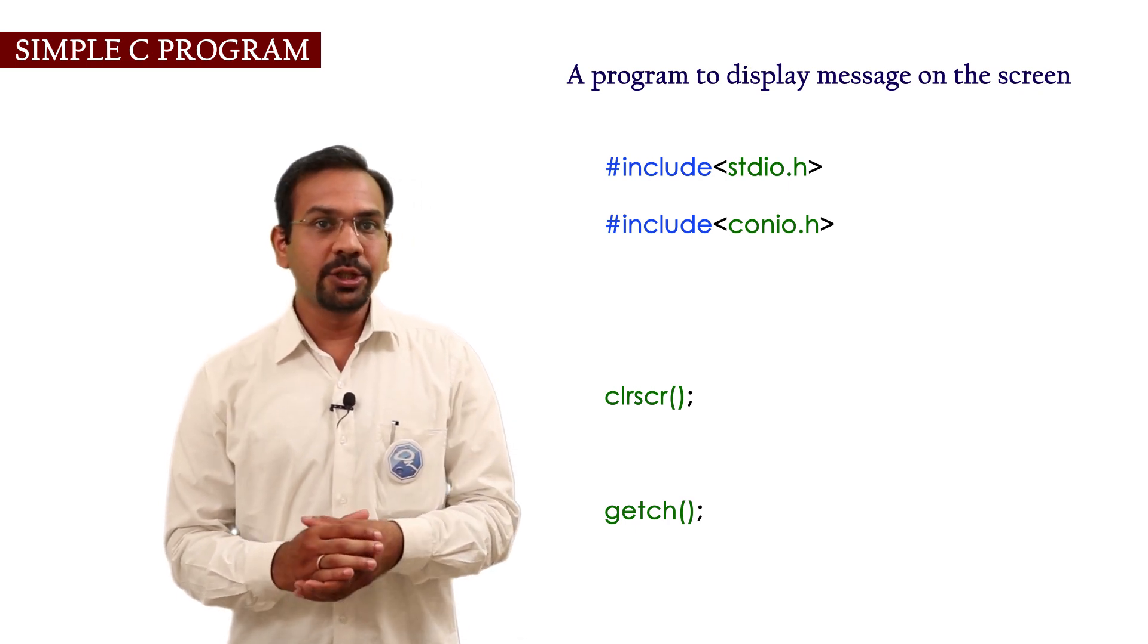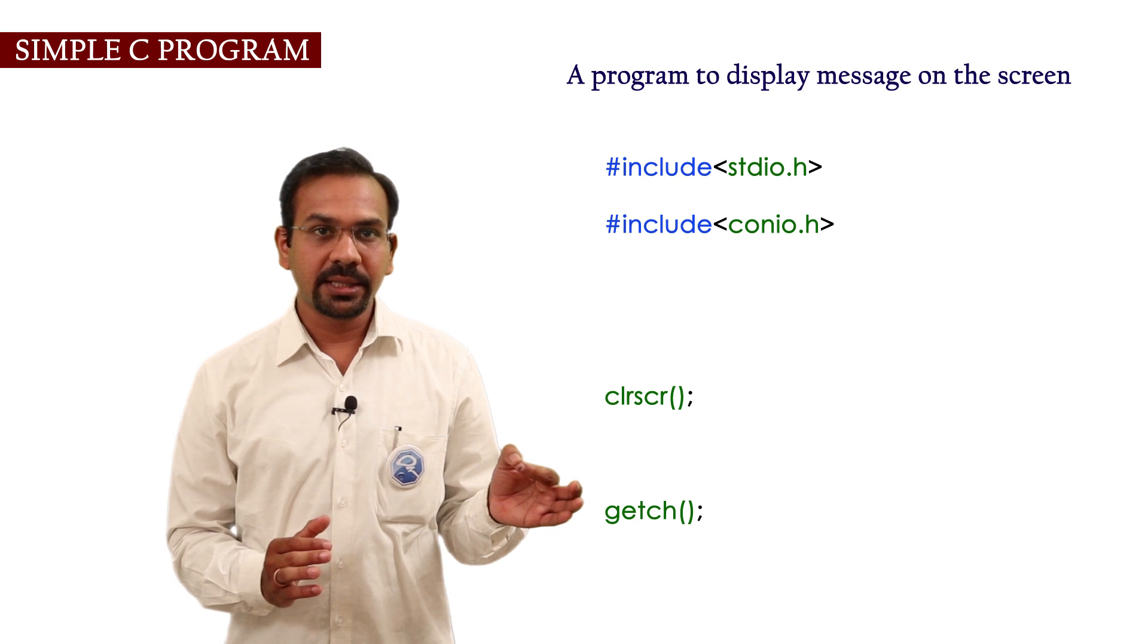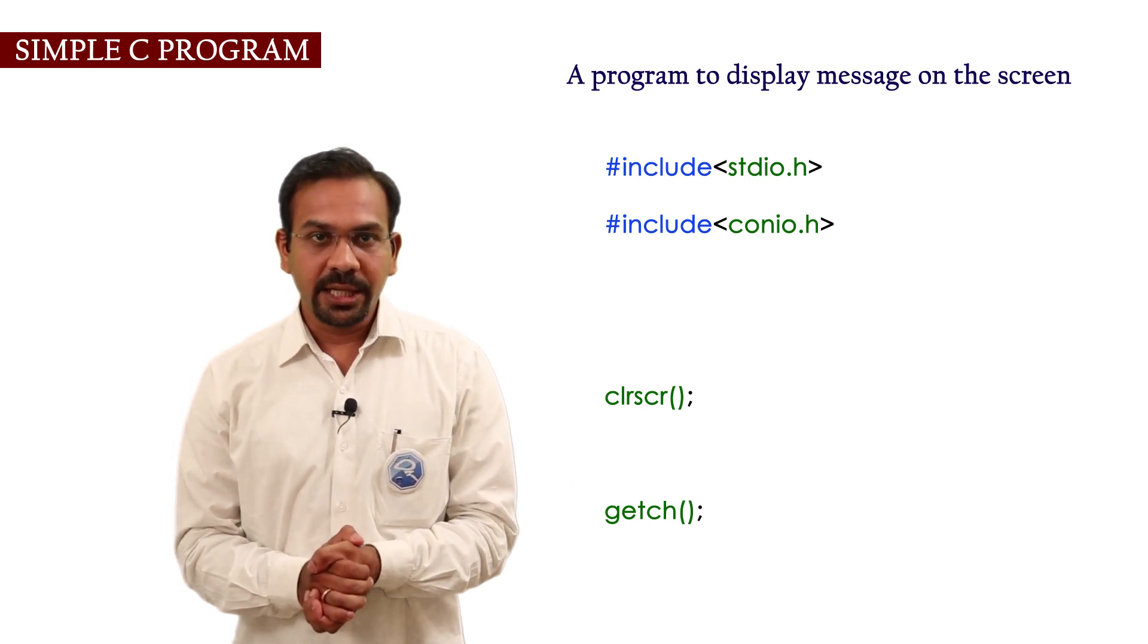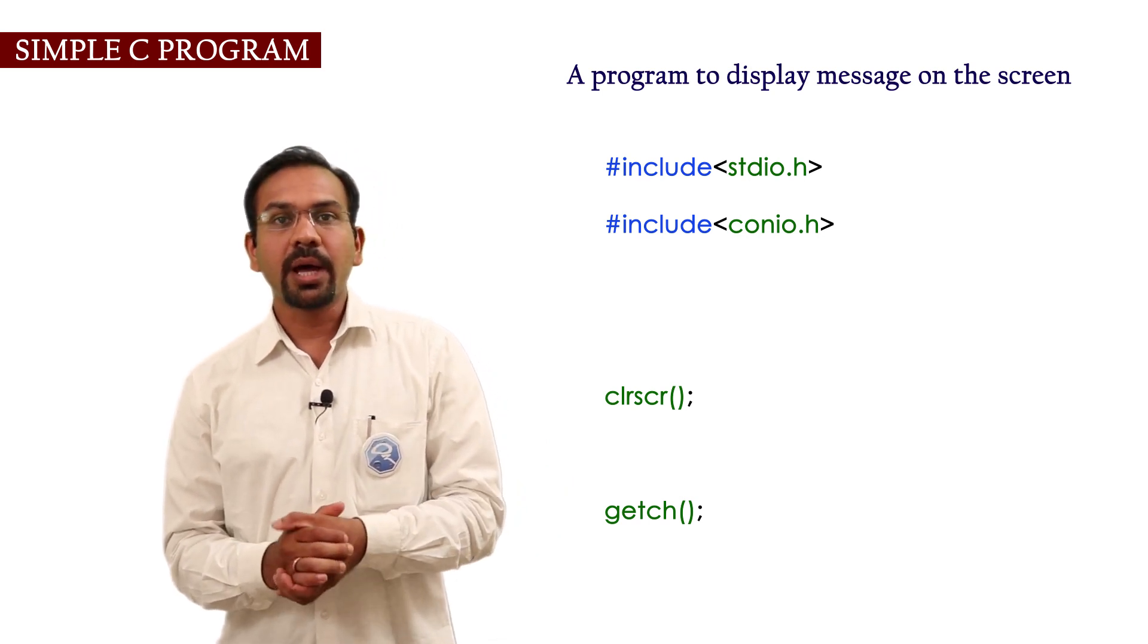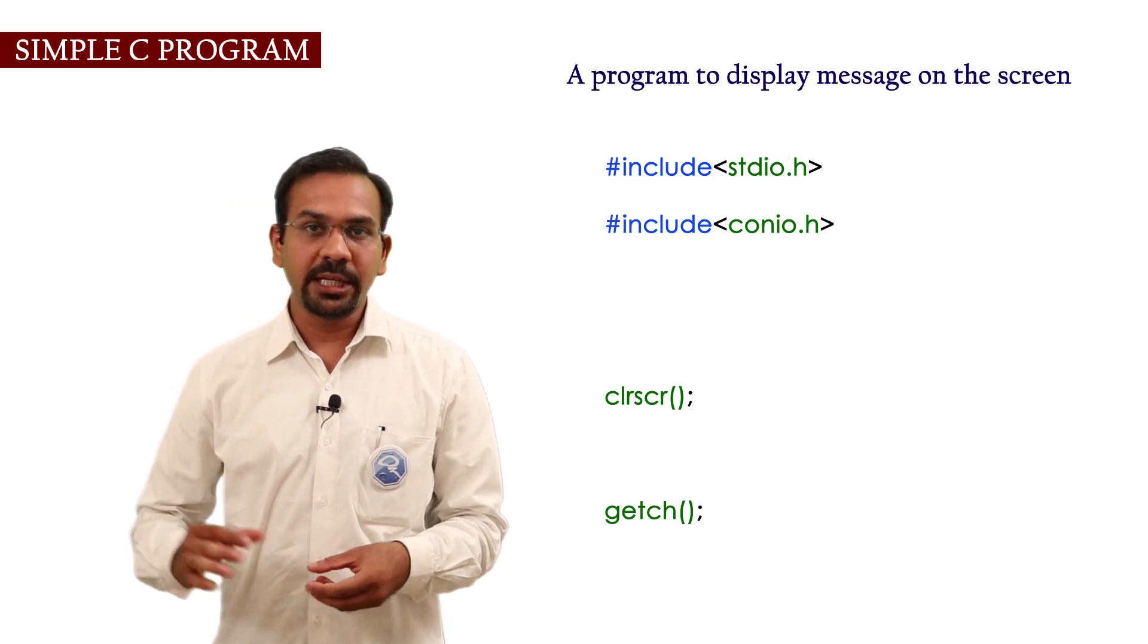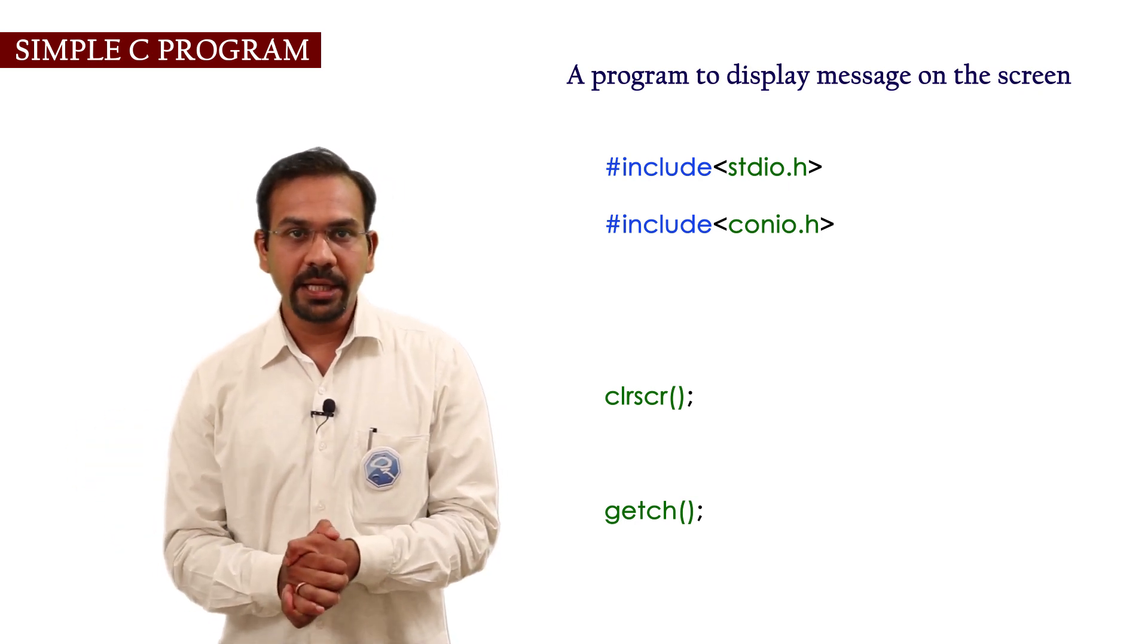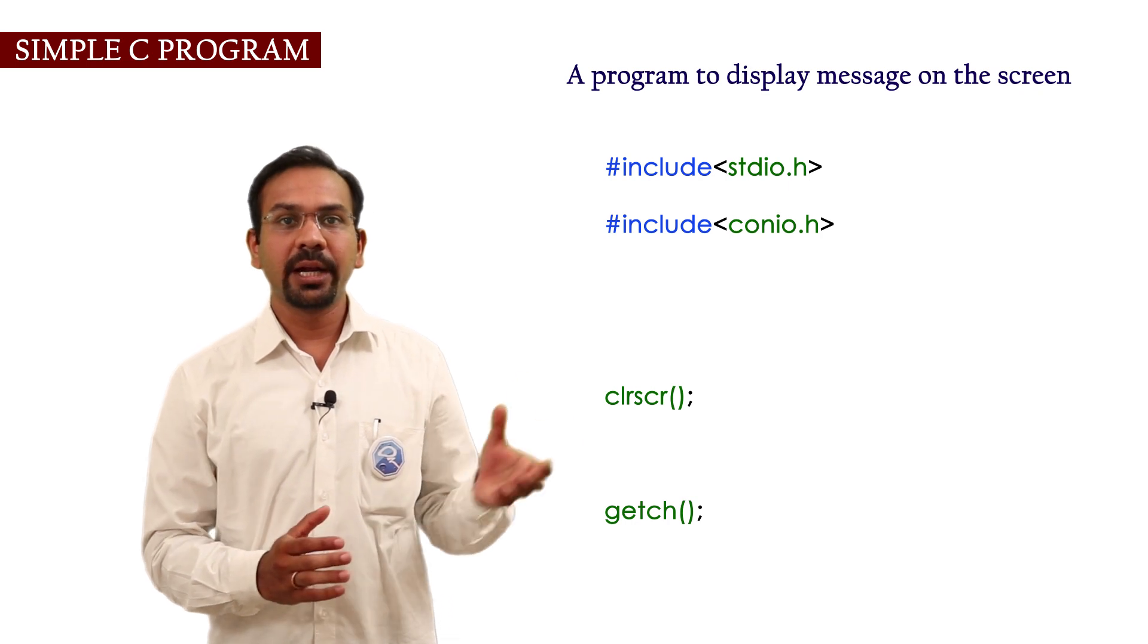clrscr function is used to clear the screen and getch function is used to hold the output window until any key is pressed on a keyboard. Thus initially we have included the header file.